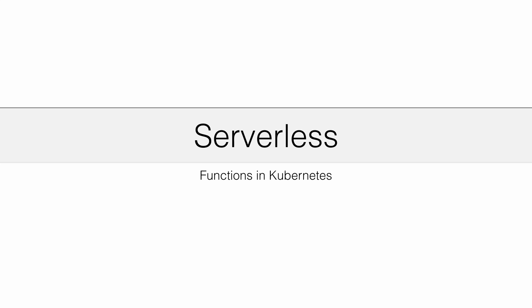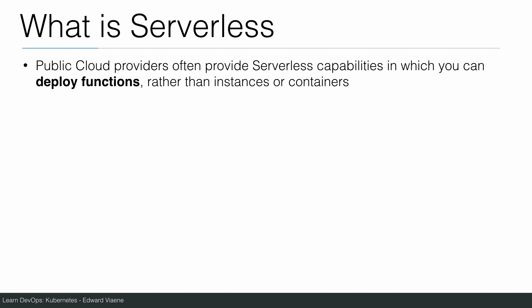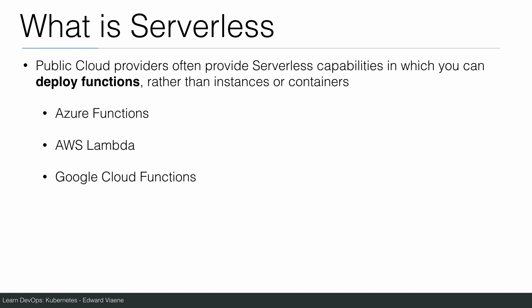In this next section, I'll be talking about serverless functions in Kubernetes. First of all, what is serverless? Public cloud providers often provide serverless capabilities in which you can deploy functions rather than instances or containers. Microsoft has Azure Functions, Amazon has AWS Lambda, and Google has Cloud Functions. So those are the main public cloud providers and they all provide ways to deploy functions.